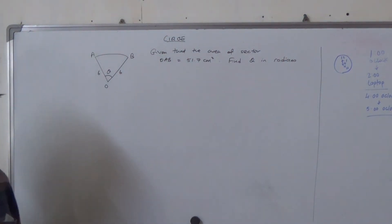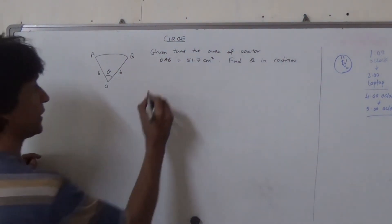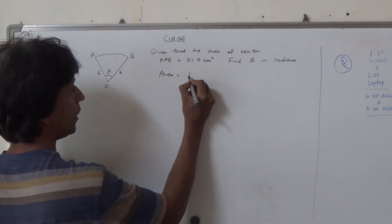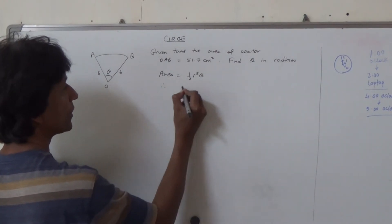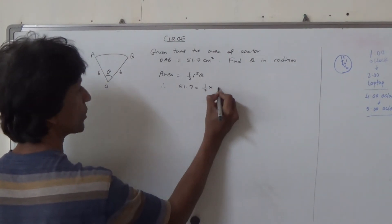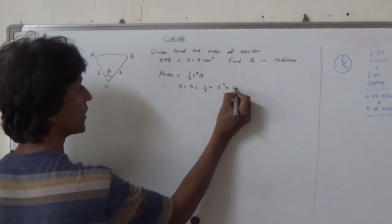Now, you'll remember that area of the sector, and the formula of that is half R square theta. Therefore, the area, which is 51.7, is equal to half times R square, 6 to the square times theta.